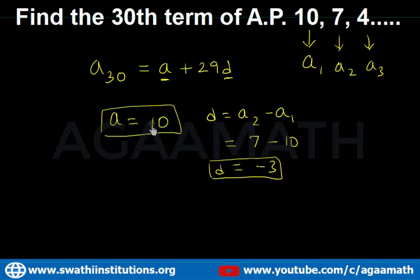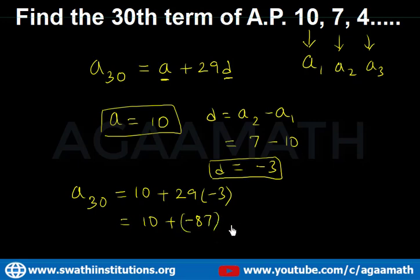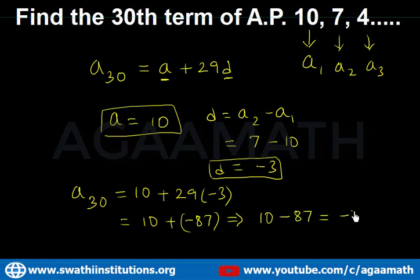Now let us substitute: a30 = a + 29d = 10 + 29 times (minus 3) = 10 + (minus 87) = minus 77. So the 30th term of the AP is minus 77.